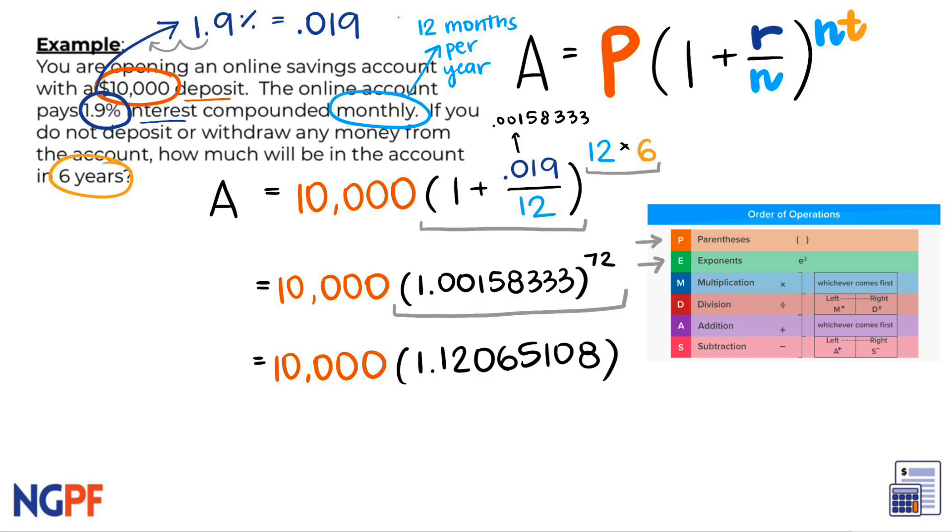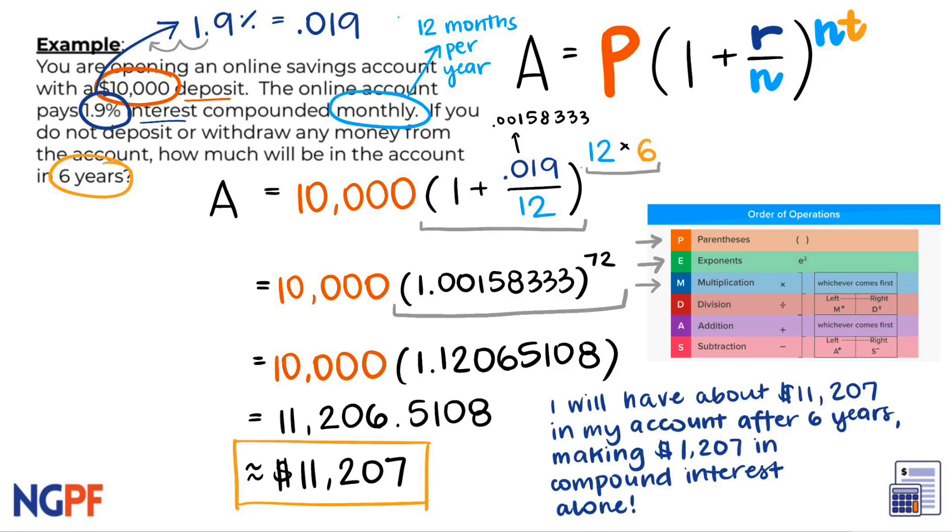We are almost there. The final operation of multiplying the 10,000 will give us our final answer of 11,206.5108. This means that if you do not deposit or withdraw any money from this online savings account with a 1.9% interest rate, after 6 years, you will have about $11,207. This means that you made $1,207 alone in interest.